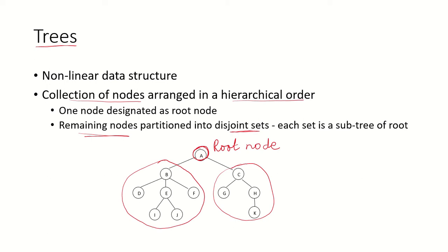The left subtree has nodes B, D, E, F, I, and J, and the right subtree has nodes C, G, H, and K. B is the left child node of root node A, and C is the right child node of root node A.